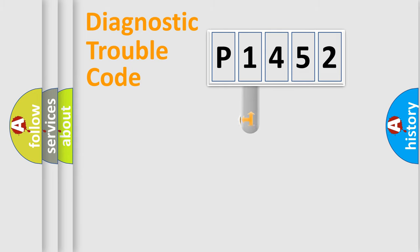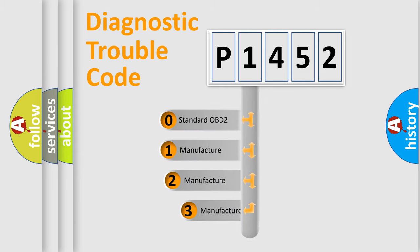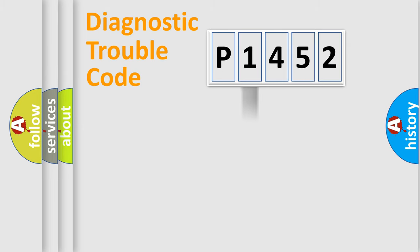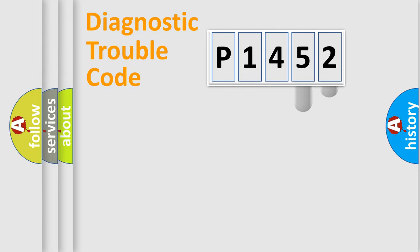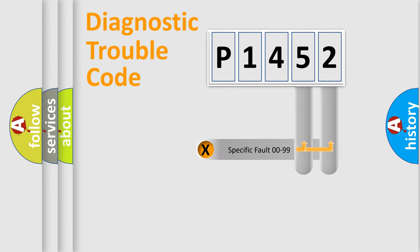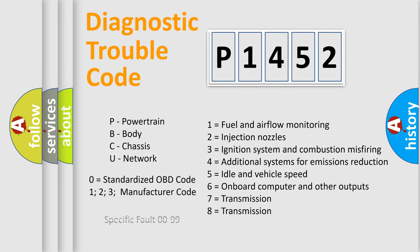This distribution is defined in the first character of the code. If the second character is expressed as zero, it is a standardized error. In the case of numbers 1, 2, or 3, it is a more specific expression of a car-specific error. The third character specifies a subset of errors. This distribution is valid only for the standardized DTC code, and only the last two characters define the specific fault of the group.